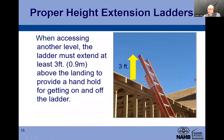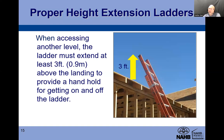Proper height for extension ladders: when accessing another level, the ladder must extend at least 3 feet — or 0.9 meters — above the landing surface, to provide a handhold for getting on and off. You can count the rungs, since they're spaced one foot apart. This way, when you're getting on and off the ladder, you have a relatively safe environment — though you still need to remain conscious and aware.